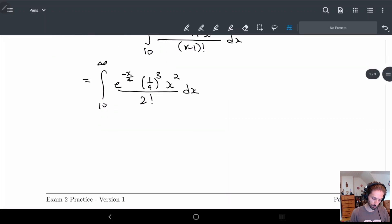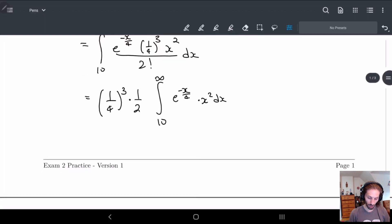So here we can bring out the numbers that we don't care about as much. So we have 1 over 4 cubed times 1 over 2 factorial, just 1 half. And then we just need to figure out 10 to infinity, e to the minus x over 4 times x squared dx. So here, if you're kind of used to this, you should know, you should right away see, oh we have this x squared, so we're probably going to have to do integration by parts two times.